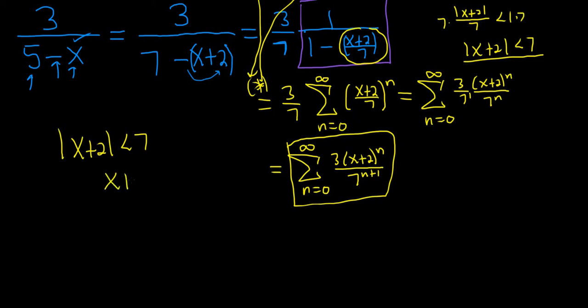So we have absolute value of x plus 2 less than 7. When you drop the absolute value, you do get a plus or a minus, so 7 and negative 7. Subtract 2 from all three sides will give us negative 9 less than x less than 5. And that would be it.